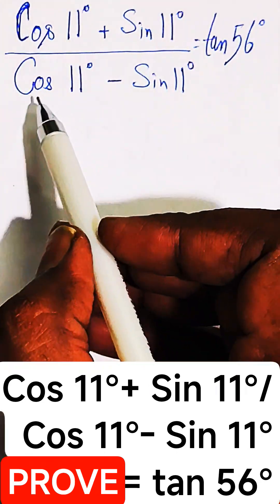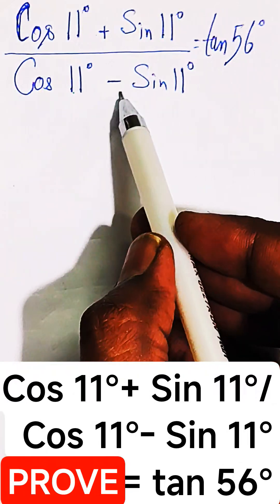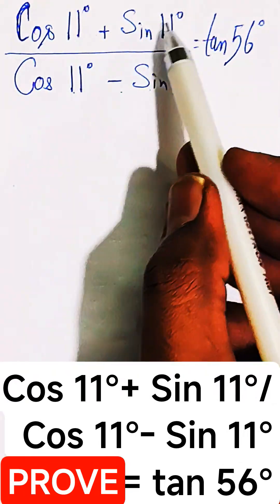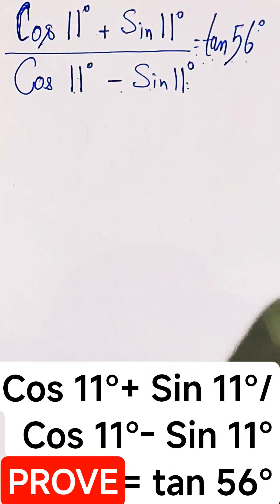This is the question for today and we need to prove that cos 11 plus sin 11 divided by cos 11 minus sin 11, all angles in degrees, is equal to tan 56 degrees.